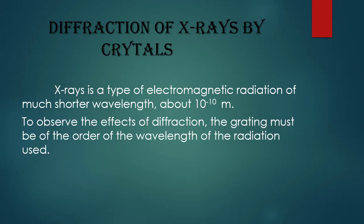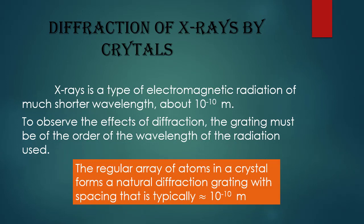To observe the effect of diffraction, the grating spacing must be of the order of the wavelength of the radiation used. The regular array of atoms in a crystal forms a natural diffraction grating with spacing typically nearly equal to 10 to the power minus 10 meters, which is comparable to the wavelength of X-rays.